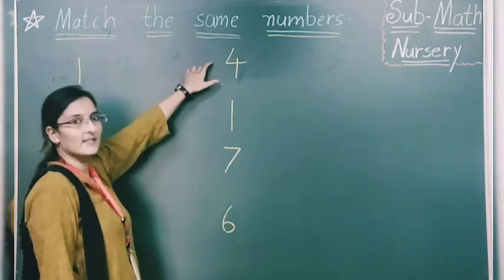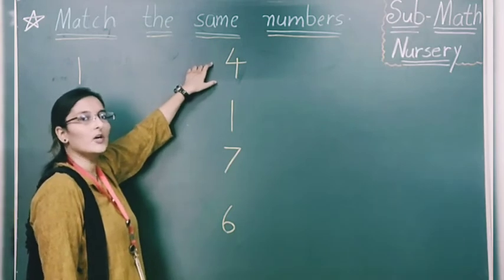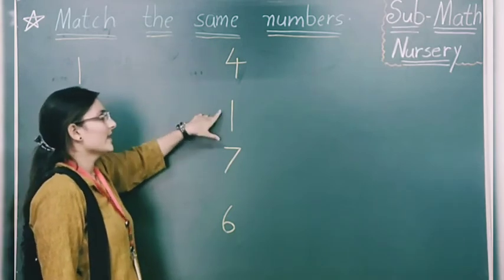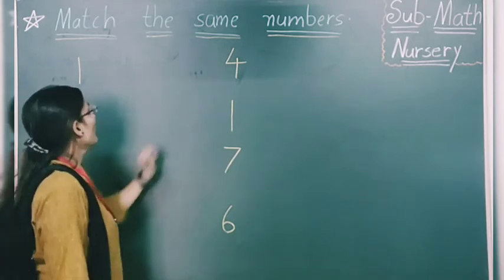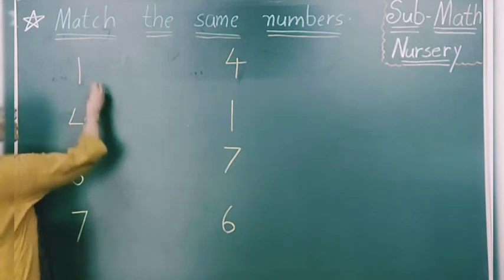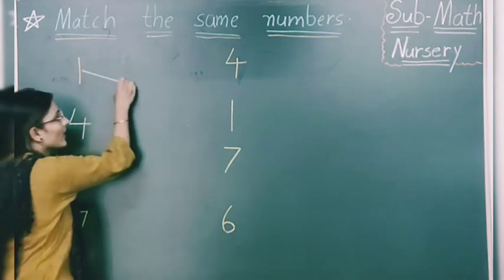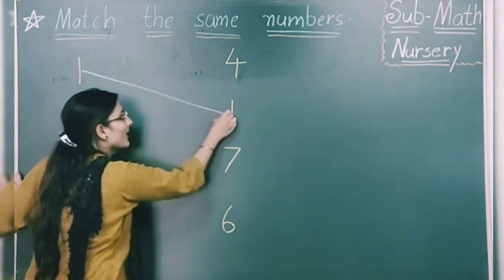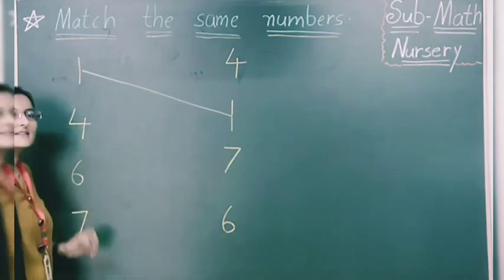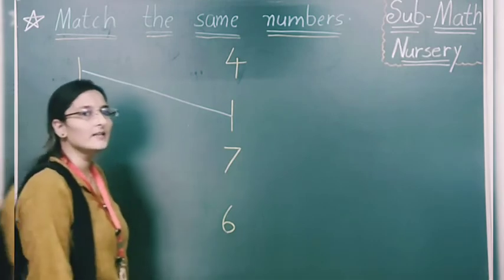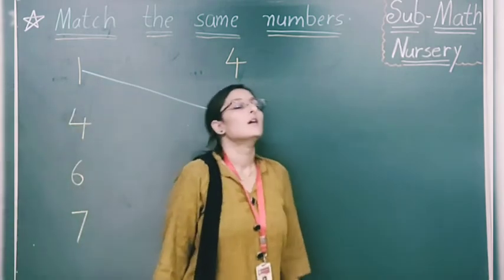Is this number 1? No. Is it 1? Yes. What you have to do? You have to draw a line from 1 to number 1. Got it? Like this you have to do matching.